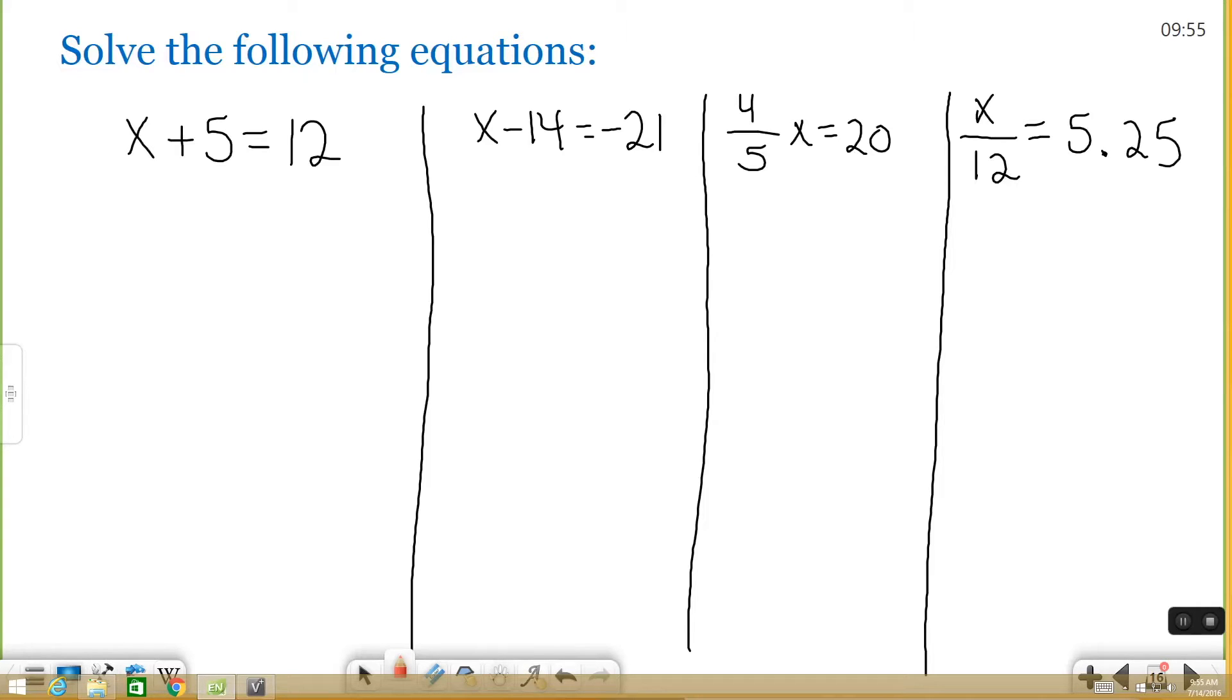So my first example, x plus 5 is 12. I have my variable and I'm adding 5 to it. So the opposite of adding 5 is subtracting 5. So minus 5, minus 5. What you do to one side, you have to do to the other. These cancel. x equals 7. So they're called one-step equations because they take one step to solve. There are equations that become more difficult. We'll get to that in a later video. Let's look at the next one.